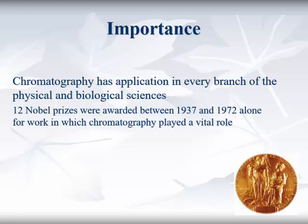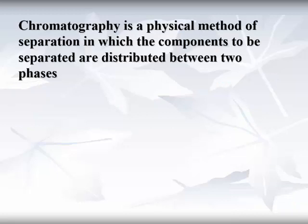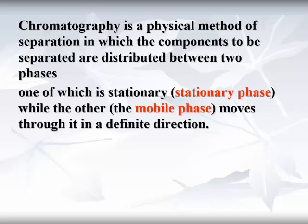Several Nobel Prizes were awarded between 1937 and 1972 for work in which chromatography played a vital role. Chromatography is the physical method of separation in which the components to be separated are distributed between two phases: the stationary phase and the mobile phase.